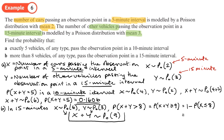We get 1 − 0.4557. Going back to the calculator and computing 1 − answer gives 0.5443. So 0.5443 is the final answer for that part.